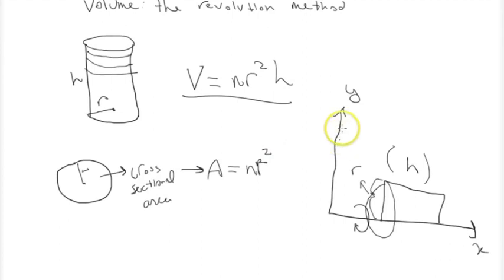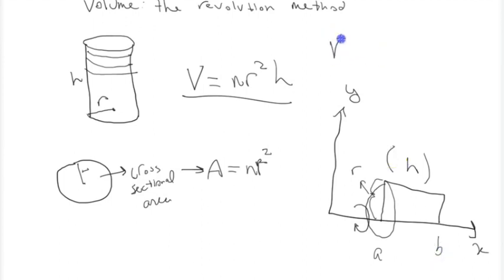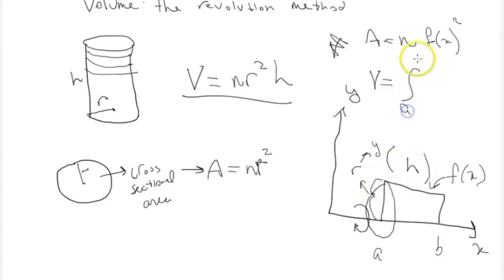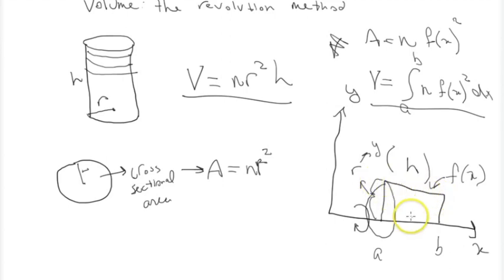Since these cross-sections can be made teeny-tiny so they're basically just flat circles, we can take a limit. If we find one of these cross-sections, we can integrate them over an interval a to b to find the volume. The cross-sectional area is pi times f(x) squared — where r corresponds to the y-value, which is some function of x. So the integral from a to b of pi f(x) squared dx gives us the volume of a cylinder found from a line in a Cartesian plane.